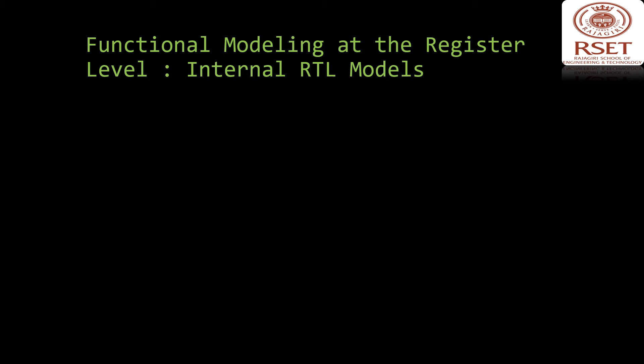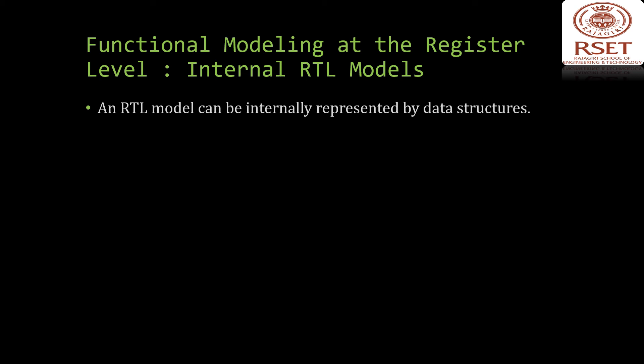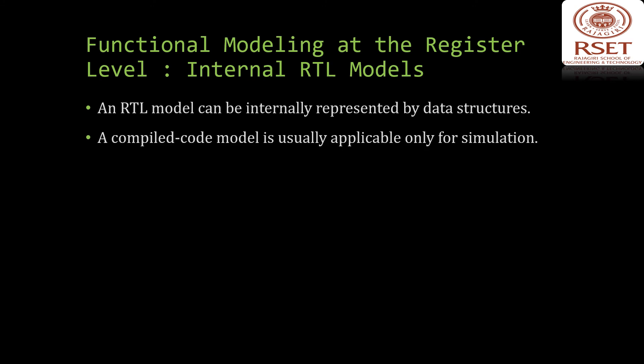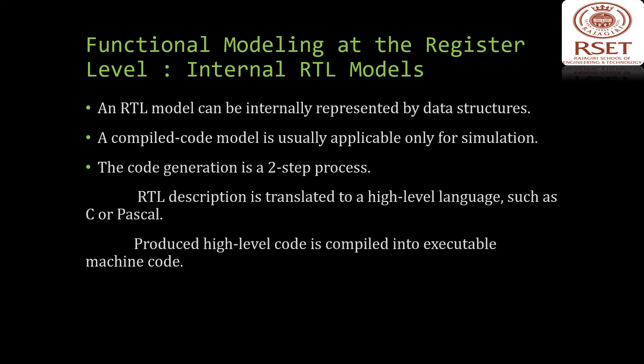The third method is internal RTL models. An RTL model can be represented internally either by data structures or by compiled code. A data-structure-based model can be interpreted for different applications by model-independent programs. A compiled code model is usually applicable only for simulations and is generated from procedural RTLs. Code generation is a two-step process: first the RTL description is translated into a high-level language like C or Pascal, and then that code is compiled into executable machine code.